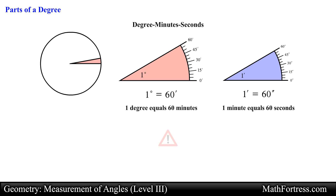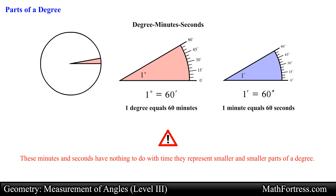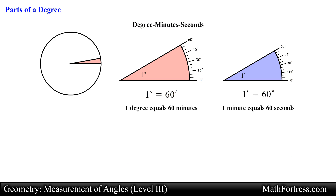Now a word of caution: these minutes and seconds have nothing to do with time — they represent smaller and smaller parts of a degree. In the context of geometry, degrees, minutes, and seconds refer to angle measurements and not units of time.